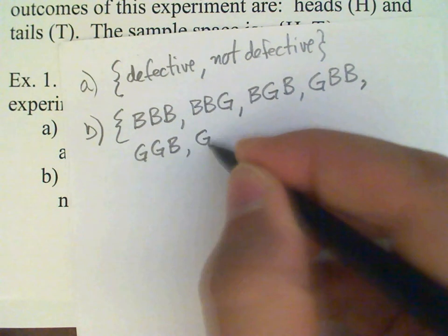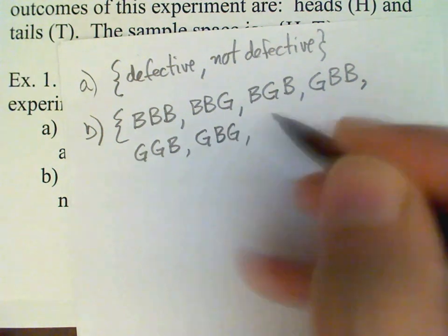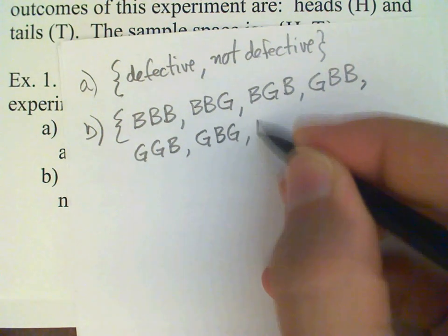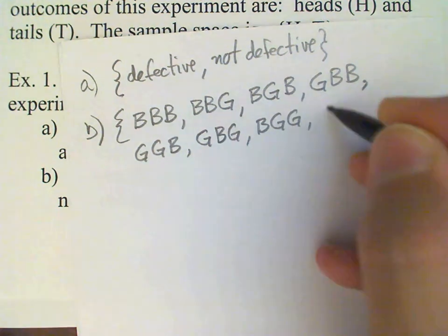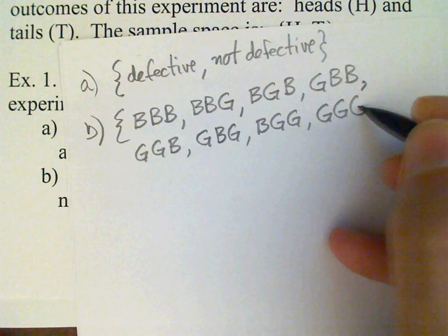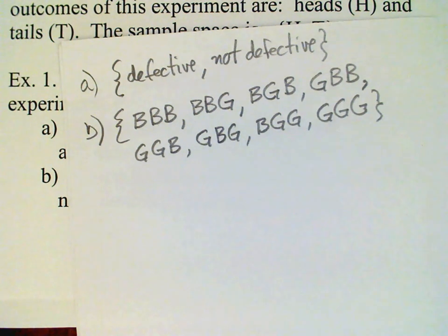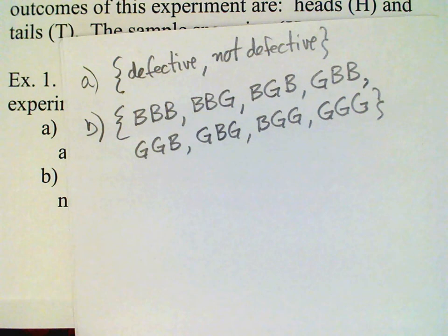Girl, boy, girl. And boy, girl, girl. And then finally, the last possibility—all three are girls. So there's our sample space for part B.